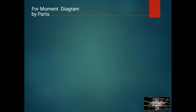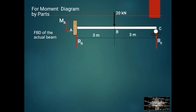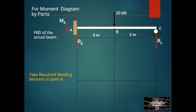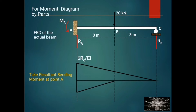For the moment diagram by parts, we need to construct the free body diagram of the actual beam. We have RA, RC, and moment at A. For the construction of the moment diagram by parts, we take the resultant bending moment at point A, giving us RC times 6 over EI, then 20 kN times 3 is equal to negative 60 over EI.